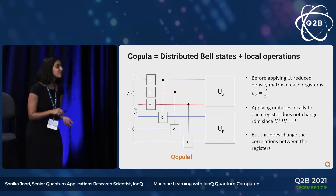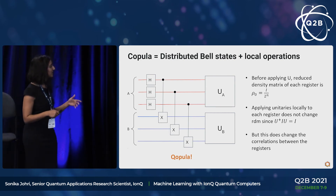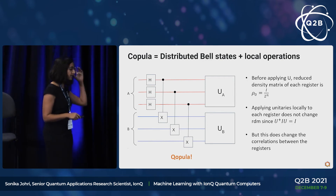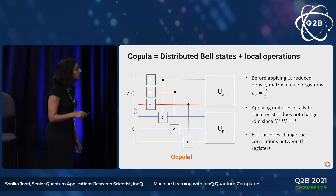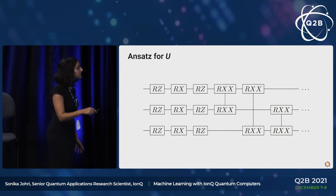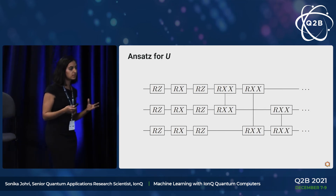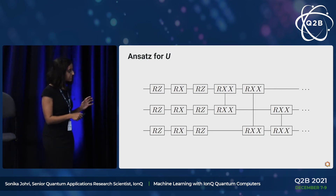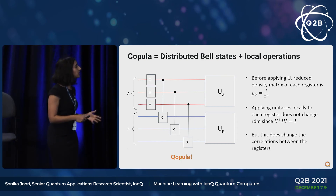We have labeled this a 'copula with a Q.' We realized that copulas can be represented by maximally entangled quantum states and found a way to manufacture those states. The local unitaries UA and UB can be constructed with parameterized quantum gates whose free parameters are optimized during machine learning training. You've essentially created a variational quantum circuit that represents a copula function and can be trained to mimic the properties of a given distribution.